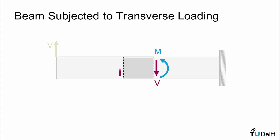And then if we isolate a small element, we see that there will also be an internal shear force and bending moment. So we can't actually isolate shear in a beam subjected to transverse loading. You will always have shear and bending.